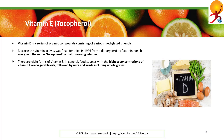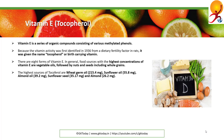There are eight forms of vitamin E. Generally, food sources with the highest concentration are vegetable oils, followed by nuts and seeds including whole grains. The highest source is wheat germ oil at 215.4 mg, sunflower oil at 55.8 mg, almond oil at 39.2 mg, sunflower seeds at 35.17 mg, and almonds at 26.2 mg.